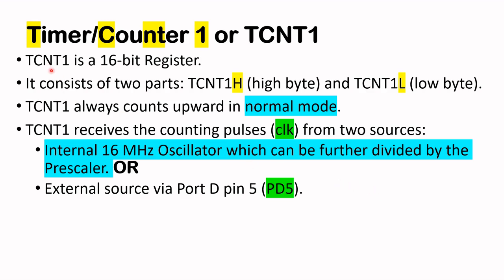The TCNT1 is a 16-bit register consisting of two parts: TCNT1H (the high byte) and TCNT1L (the low byte). TCNT1 always counts upwards — it is an up counter in normal mode. It receives counting pulses (the CLK signal) from two sources: the internal 16MHz oscillator, which can be divided by a pre-scaler, or the external source on port D pin 5 (PD5) on the Arduino Uno.